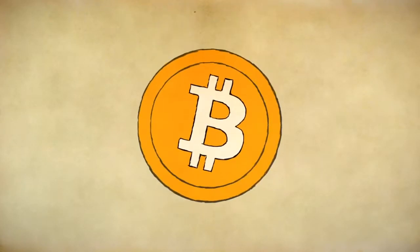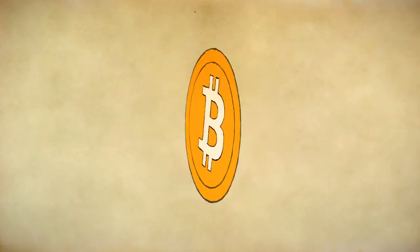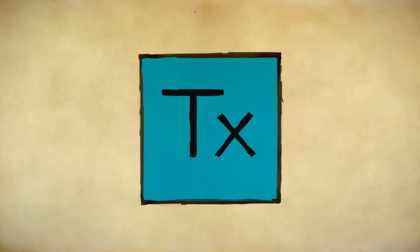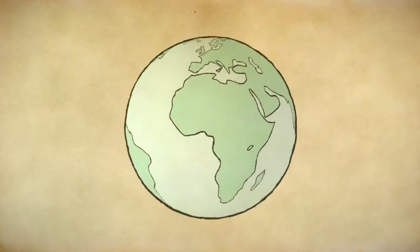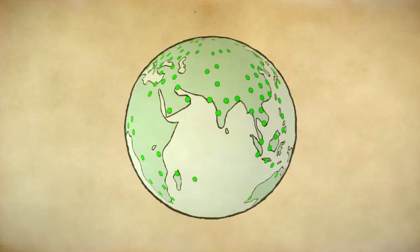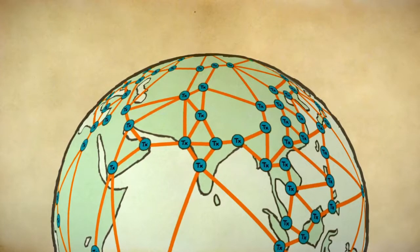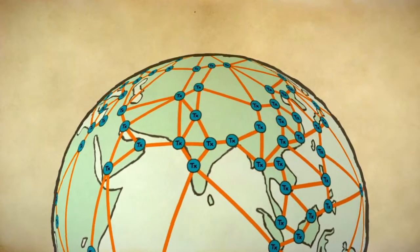You all know Bitcoin. It's our secure, inflation-proof, decentralized currency. You make a transaction and it gets published to the global Bitcoin network. Bitcoin nodes all around the world forward that information to each other. Until seconds later, the whole world knows about your transaction.